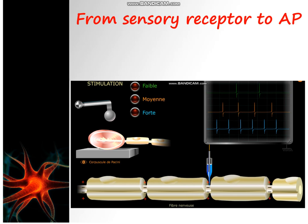So what is the difference between the three messages? What does the nerve center that receives these messages refer to in order to distinguish between the three exerted pressures? In fact, the more the exerted pressure is higher, the more the generated action potentials are frequent. The nerve center refers to how many APs occur during a specific period of time — we call this the frequency of action potentials.